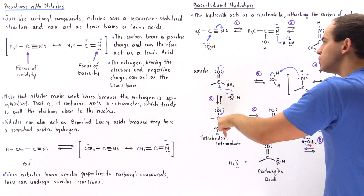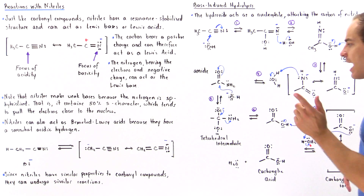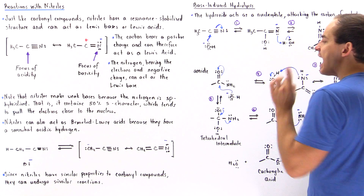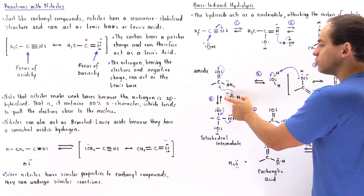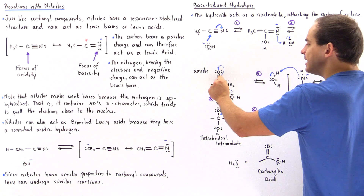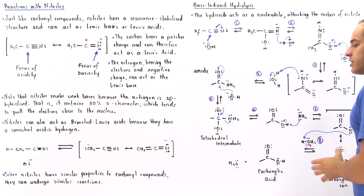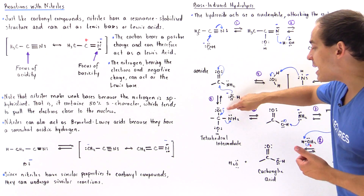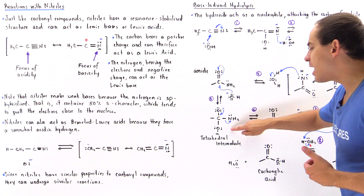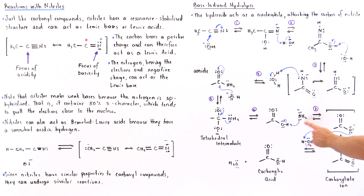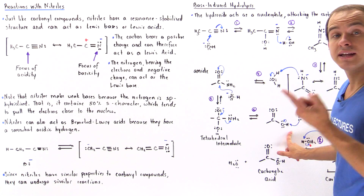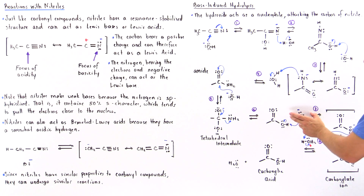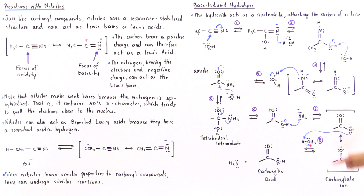Now the amide can undergo the hydrolysis reaction. The carbon on the amide acts as the Lewis acid, and our nucleophile hydroxide is the Lewis base, so we form a bond, kicking off the pi bond and forming the tetrahedral intermediate. In the next step, because we're under basic conditions, the pi bond is reformed and this molecule is kicked off. Once this molecule is kicked off, we form the carboxylic acid — but because we're in base, and because this is such a strong Lewis base, it deprotonates the H and we form the carboxylate ion.